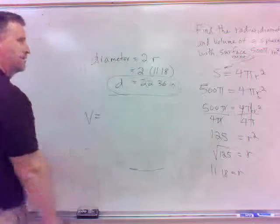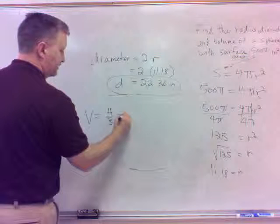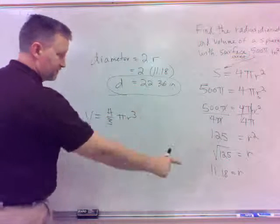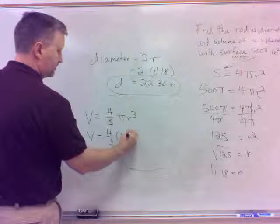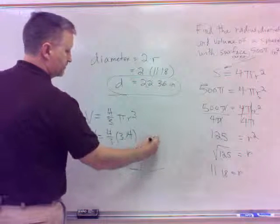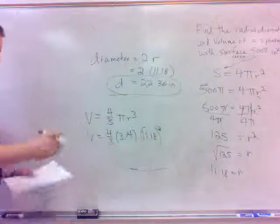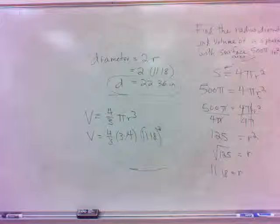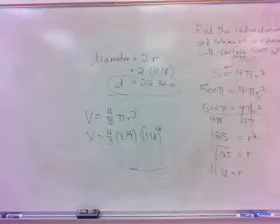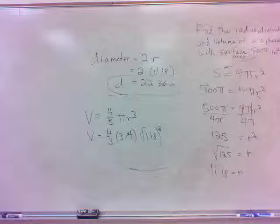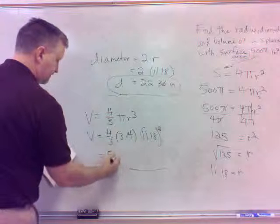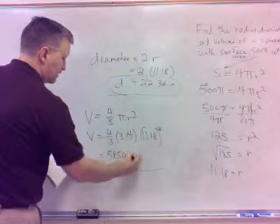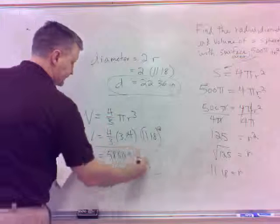The volume, how do we get it? Well, it's another formula. It's 4 thirds pi r cubed. Now, since I have the radius, I can do the volume. It's 4 thirds pi, so 3.14, times the radius cubed, so it would be 11.18 cubed. Multiply all that together, and you would have it 4 thirds, 4 divided by 3, times 3.14, times 11.18 cubed. 58, 50.5. That would be cubic inches for the volume. All right?